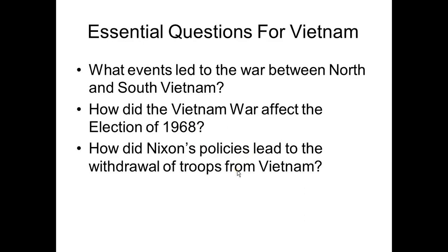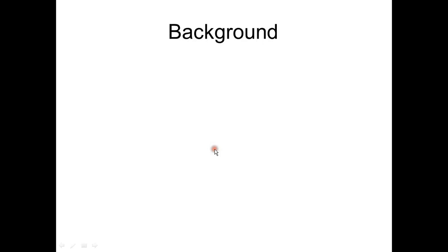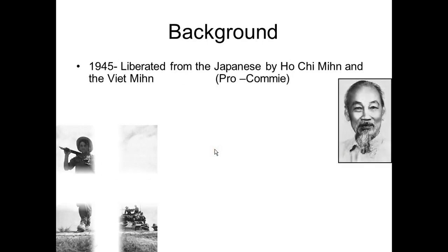In 1945, the Vietnam area was liberated from the Japanese by a man named Ho Chi Minh and his followers, the Viet Minh. There's Ho Chi Minh right there — he was pro-communist.